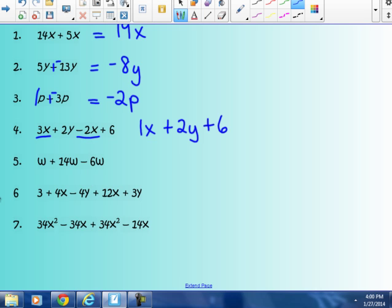Forgot to say that at the beginning. Number 5, w + 14w - 6w. You could call them watermelons, or you could just say w's. 1w + 14w, that's 15w. Take away 6w is 9w. They are all like terms. So, I can combine all 3 of these together to get a total of 9 watermelons.